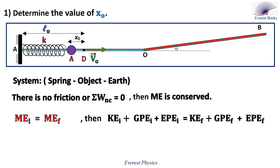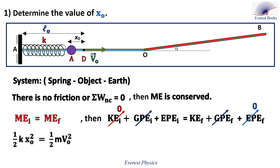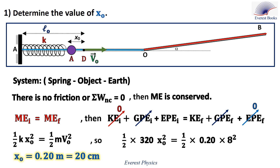The body starts from rest so KE initial equals zero. Since HA equals HD, the initial and final gravitational potential energies cancel. Since the spring returns to its natural length, the final elastic potential energy equals zero. Therefore: one-half k x0 squared equals one-half m v0 squared. Replacing each quantity by its value gives x0 equals 0.2 meters, which is equal to 20 centimeters.